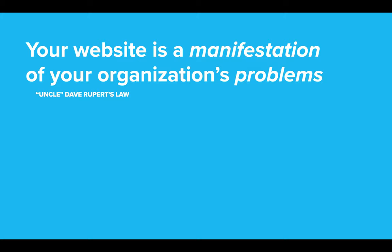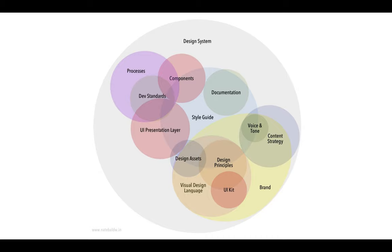Uncle Dave Rupert has his own law: your website is a manifestation of your organization's problems. Products tend to reflect the communication problems of the teams building that product. If you take a look at this graphic one more time, we can see that each of these artifacts is coming from a different team, either communicating or not communicating with other teams. Something like documentation — maybe it's owned by a product team or maybe by technical writers. The UI presentation layer could be owned by a UX department, while the actual UI kit and visual design language is owned by maybe a brand team or a marketing team — teams that don't necessarily work together on a day-to-day basis.